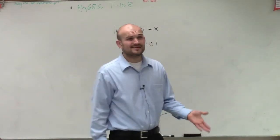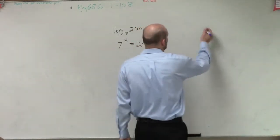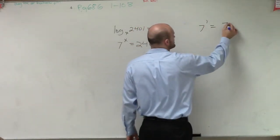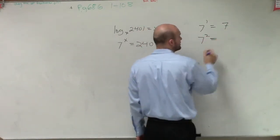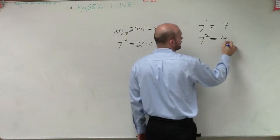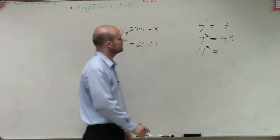So we need to say, 7 raised to what power gives us 2,401? Well, we know 7 to the first power is 7. I have to keep typing 7 in my calculator. OK. 7 squared is going to equal 49.